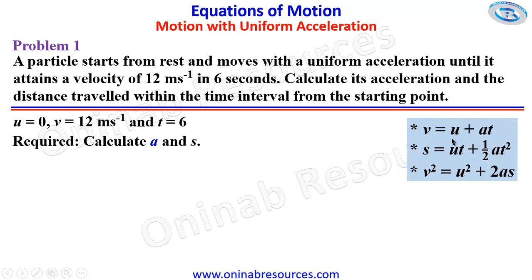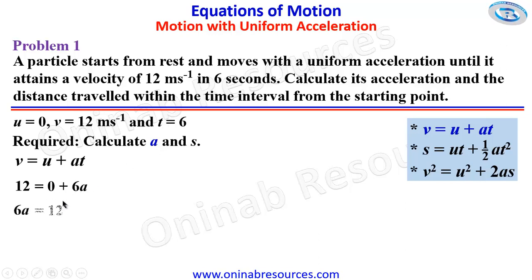We look at our equations of motion. For the first equation, we are given the final velocity, initial velocity, acceleration, and time. We are going to make use of the first equation. Substituting into the first equation: the final velocity is 12, the initial velocity is 0, and the time times A gives plus 6A, which means 6A is equal to 12. Dividing both sides by 6, acceleration is 2 meters per second squared.